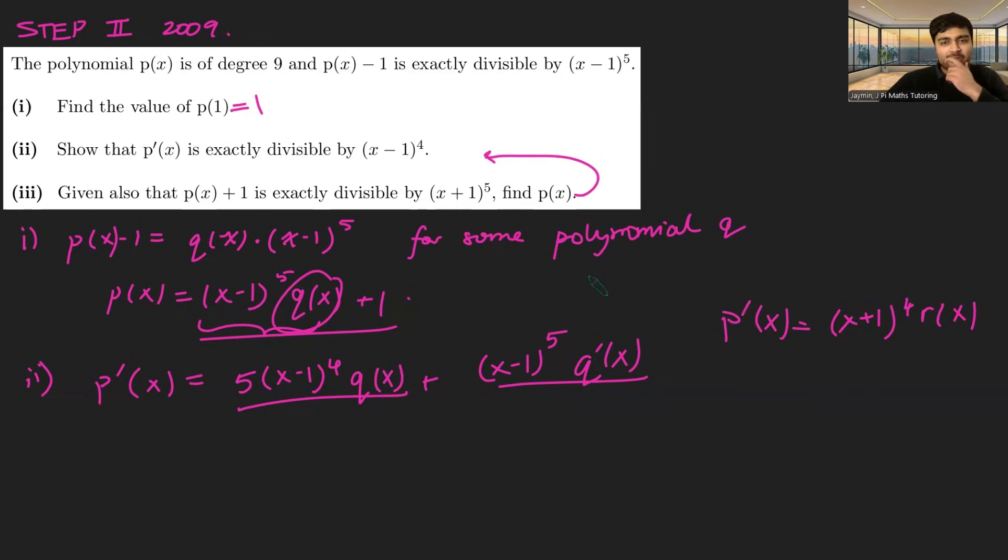But now we get that p'(x) is divisible by (x-1)^4, and it's divisible by (x+1)^4. So that must mean that p'(x) is (x-1)^4 times (x+1)^4, if it's divisible by both. And p(x) is of degree 9, so p'(x) is going to be of degree 8. So it's going to be something like this, but we also just have to factor in there could be a constant at the front, so I'll call that k.